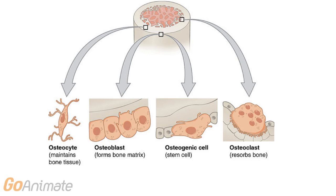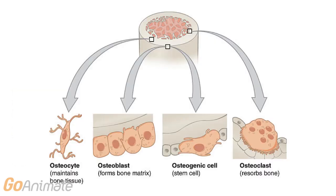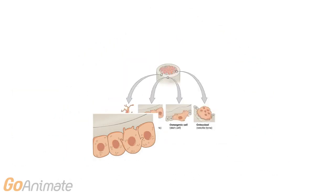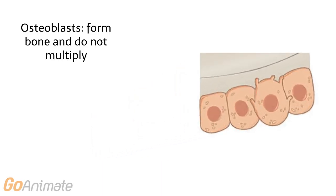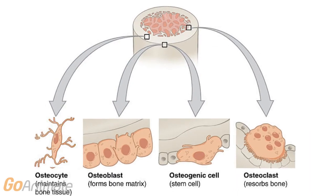Types of bone cells include osteocytes, osteoblasts, osteogenic cells, and osteoclasts. Osteogenic cells are stem cells that can multiply and develop into other bone cells. Osteoblasts are bone-forming cells that do not multiply. New osteoblasts come from osteogenic cells, and trapped osteoblasts become osteocytes.